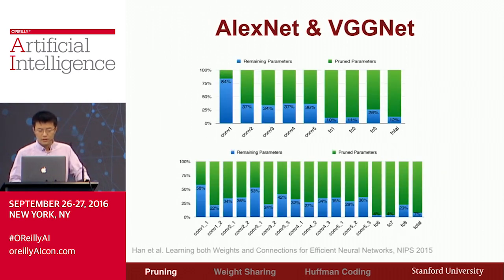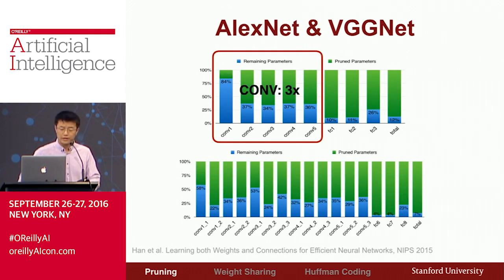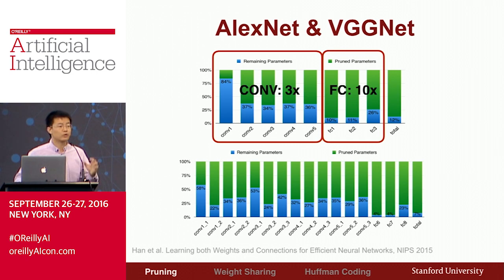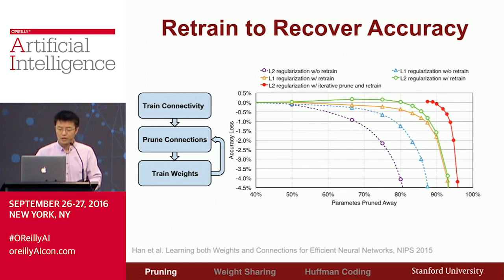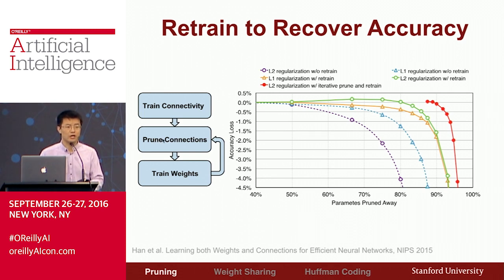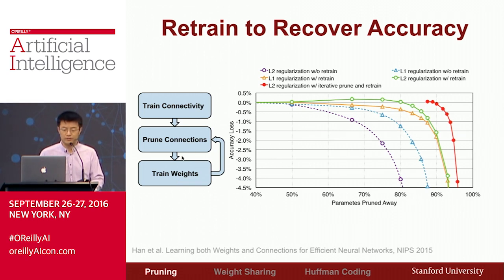The same rule applies to artificial neural networks. We can prune the convolution layers by 3x on AlexNet and the fully connected layers by 10x on VGGNet. The procedure is: first train the connectivity to see which connections are useful, then prune away redundant connections by absolute value, and finally retrain the remaining weights iteratively. By doing this iteratively, we can prune away 90% of the parameters with no loss of accuracy.